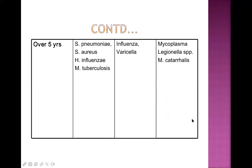When the child becomes older than five years, causative organisms include pneumococci, Staph aureus, Haemophilus influenzae, and Mycobacterium tuberculosis. On the viral side: influenza and varicella — varicella being the causative organism of chickenpox, one complication of which is pneumonia. Mycoplasma, Legionella species, and Moraxella catarrhalis can also lead to atypical type symptoms in this age group.